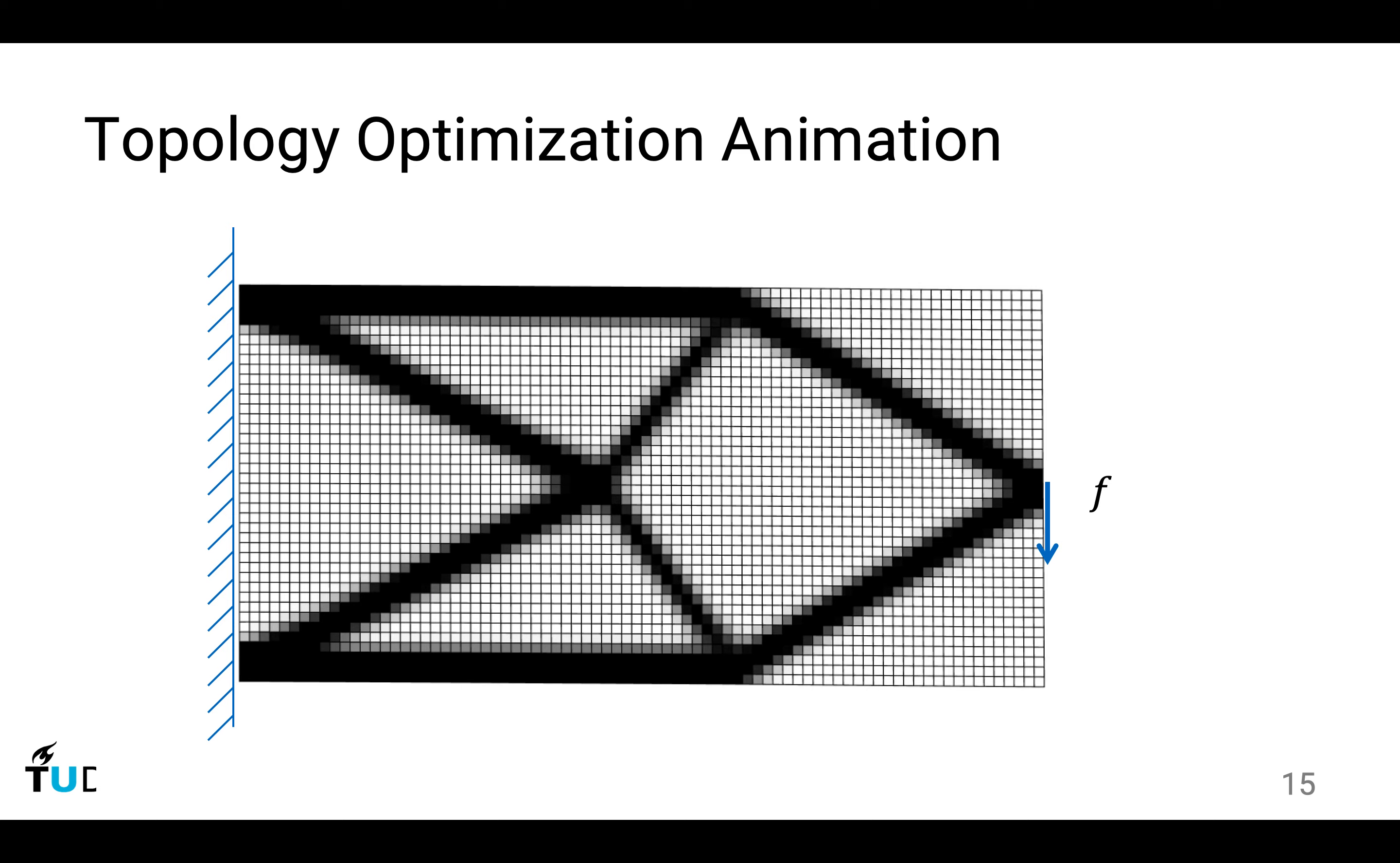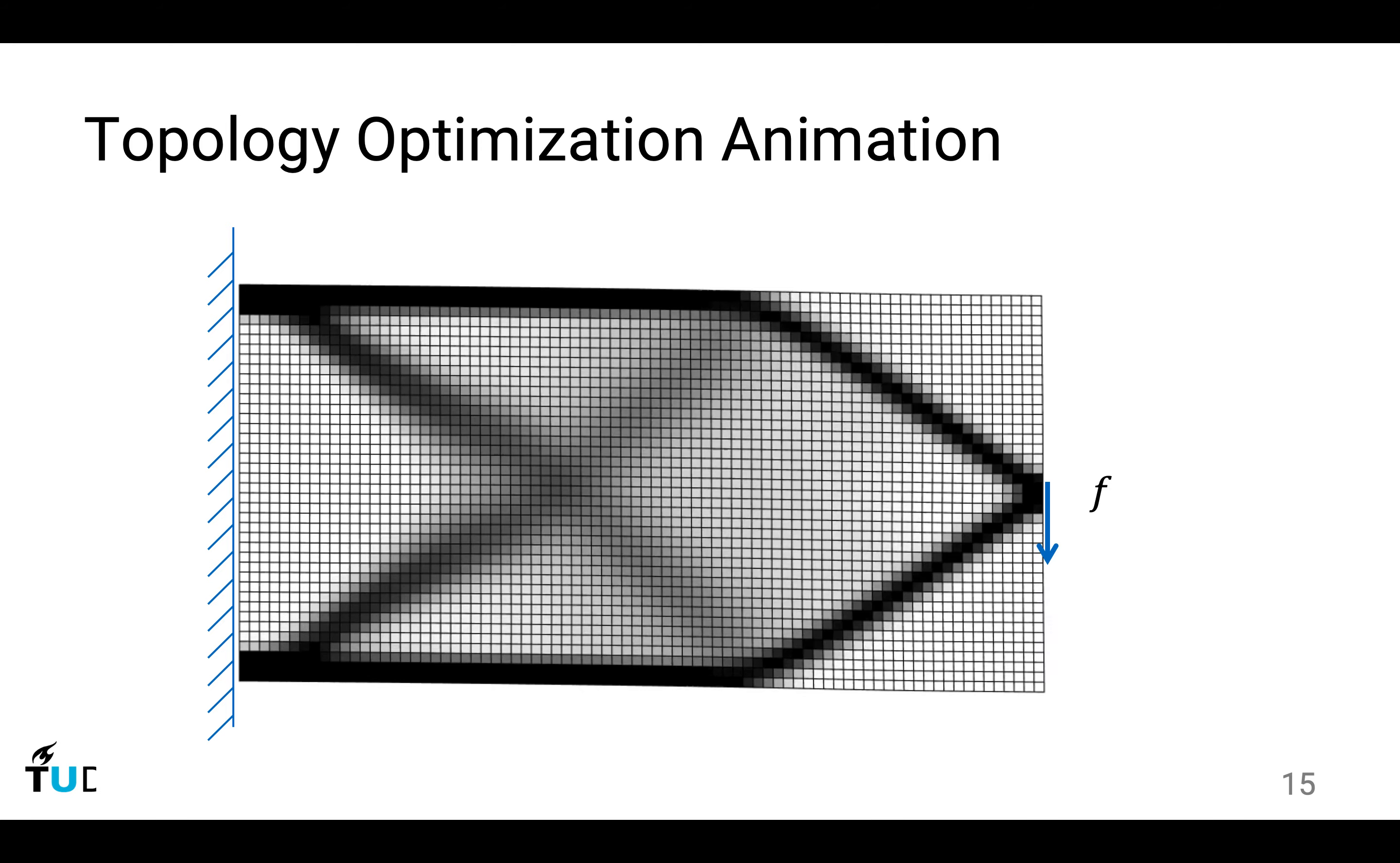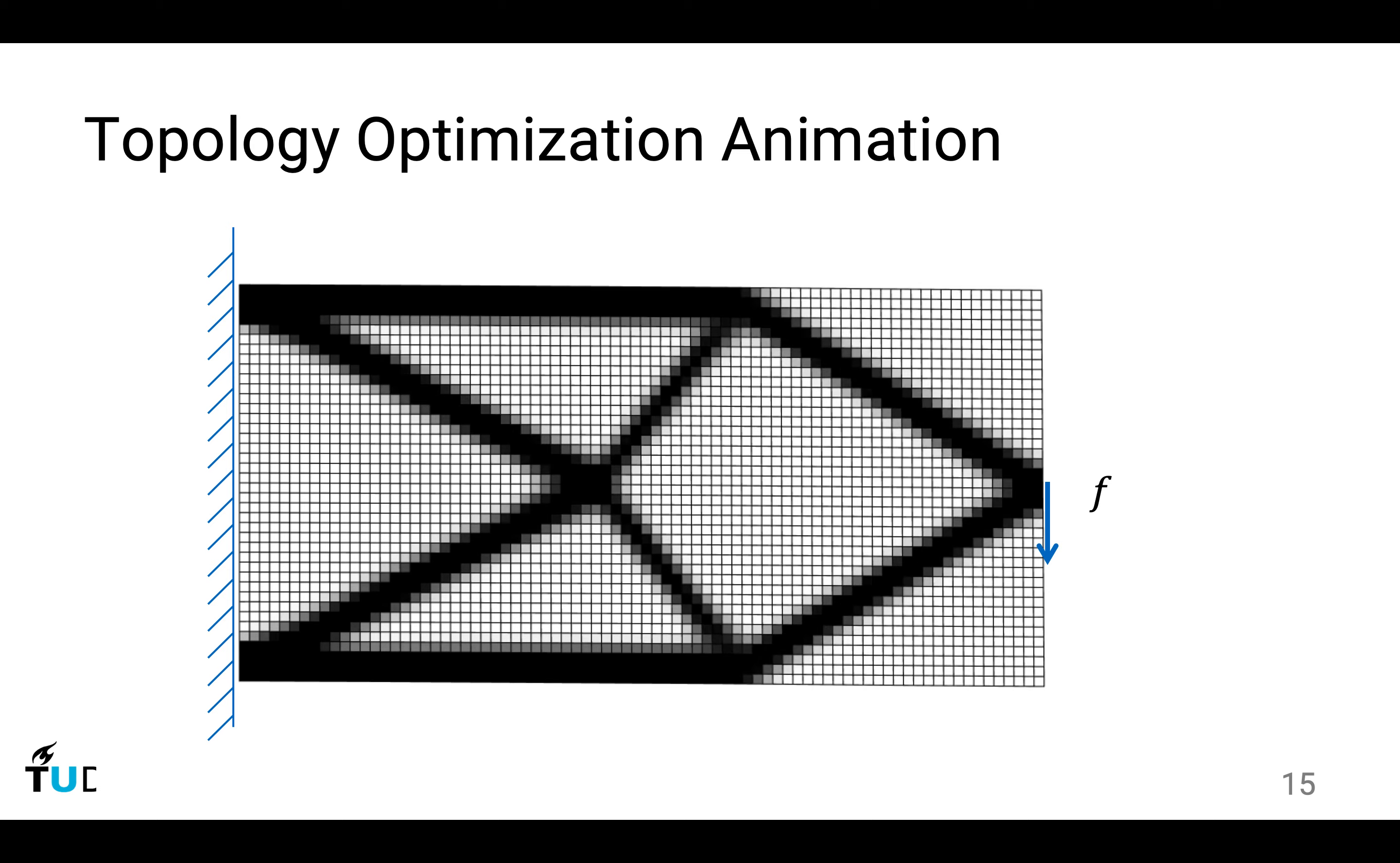Let's have a look at this animation, telling us how this shape is found by this optimization process. In this optimization process, it looks like the material is propagating from some region to another region. As the material concentrates to form a solid structure, the deformation becomes smaller and smaller.